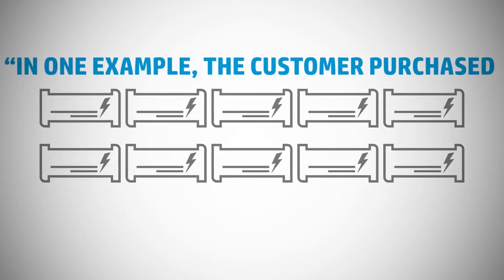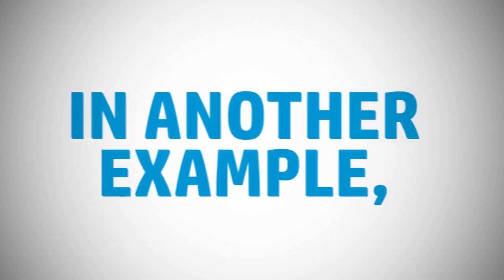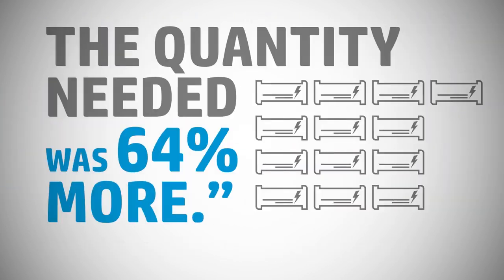In one example, the customer purchased 90% more kits by ordering refurbished. In another example, the quantity needed was 64% more.